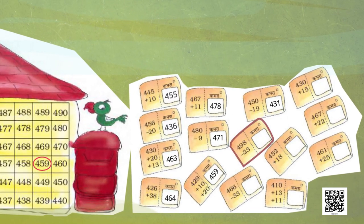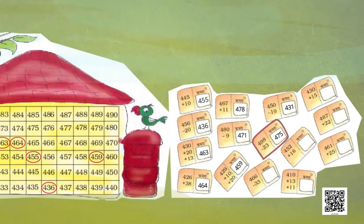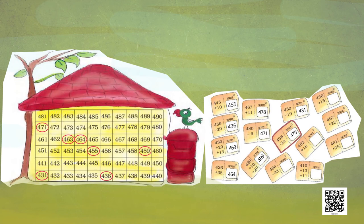Now the next envelope: 498 minus 23. What do you get after subtracting? Yes — 475. Let us deliver this letter to room number 475. Circle the address.